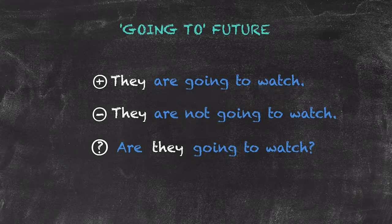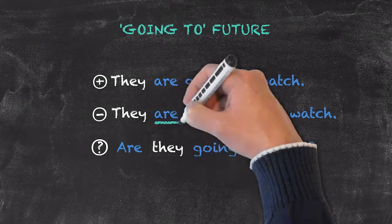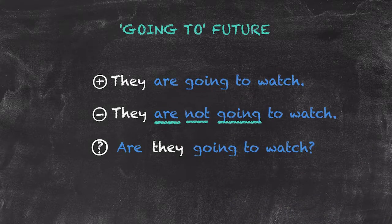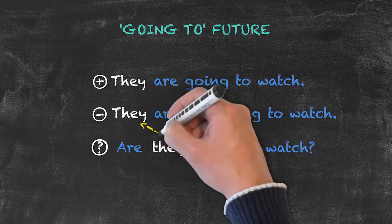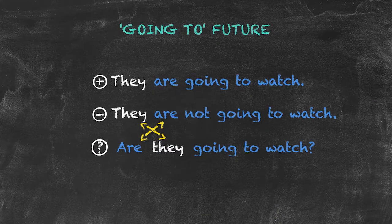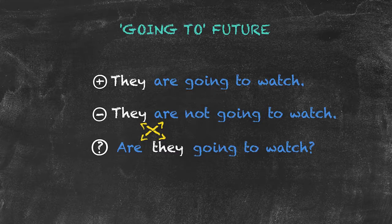To add the negative, we'll put not in between are and going. And to make the question, we'll invert the subject and the helping verb, resulting in are they going to watch?